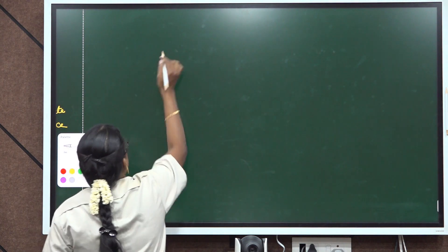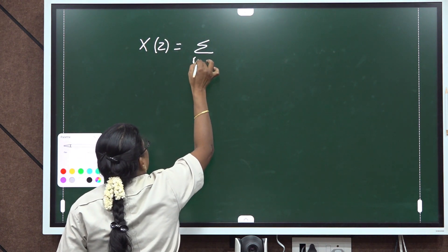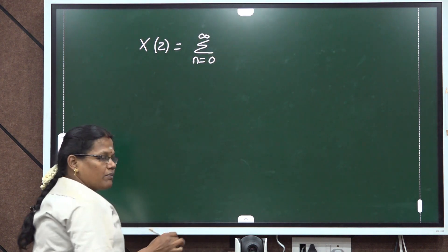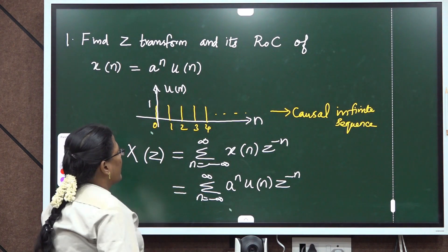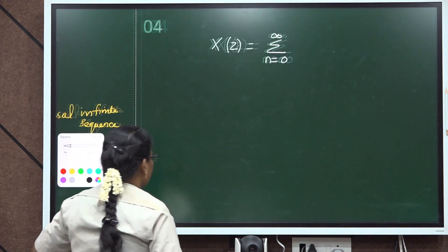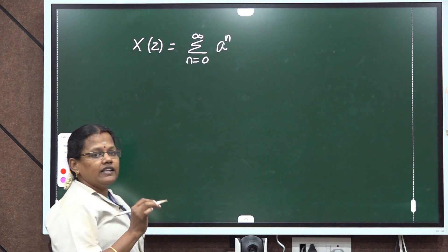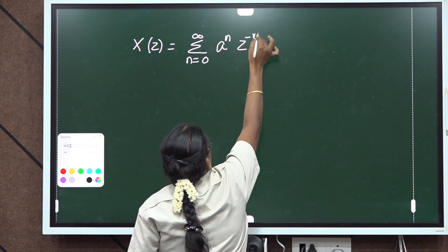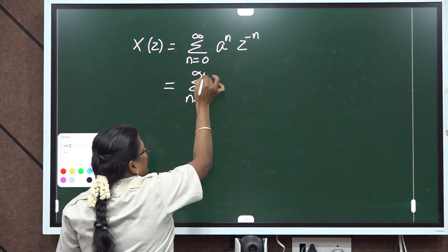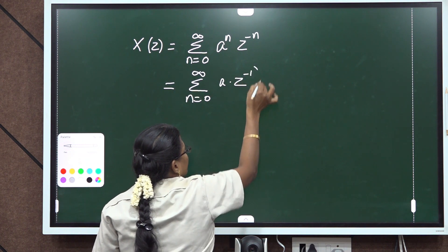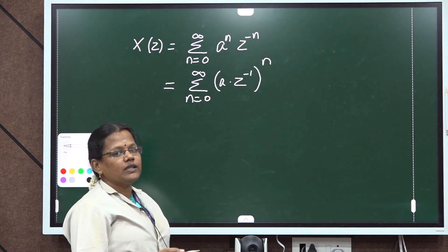In the next step, X(z) is equal to summation n equal to 0 to infinity. Since the value of u(n) equals 1 in this range, we write: summation n equal to 0 to infinity of a power n times z power minus n. This can be written as summation n equal to 0 to infinity of (a times z power minus 1) whole power n, since a and z power minus 1 both have the power n and we can take the power as common.